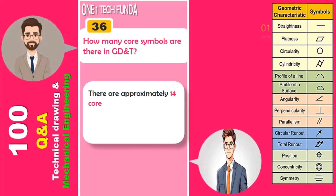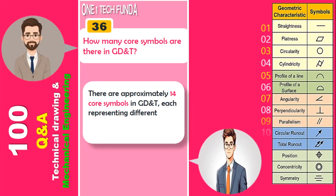There are approximately 14 core symbols in GD&T, each representing different geometric characteristics and tolerances.